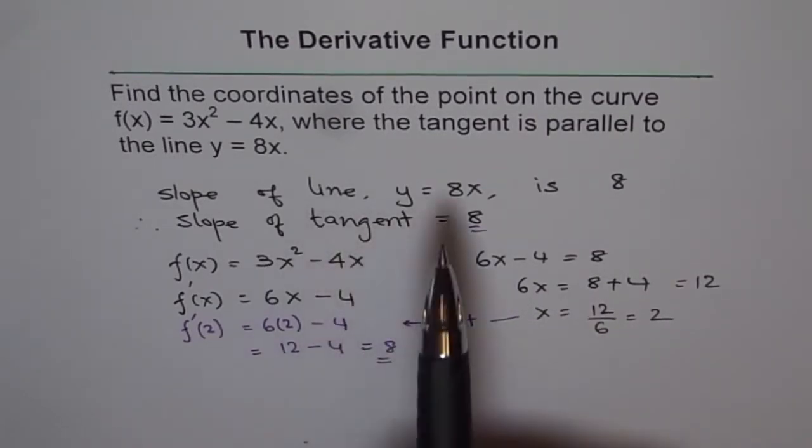Now we know that at x = 2, the slope of the tangent to this function is 8, which is parallel to the line. What are the coordinates? When we say coordinates, don't forget to find the y point also. How will you find y?